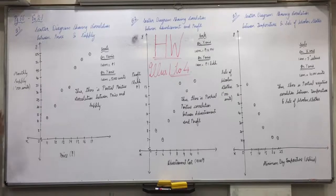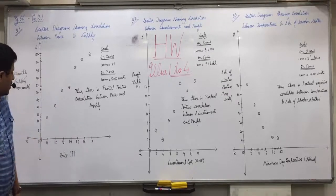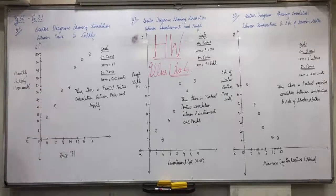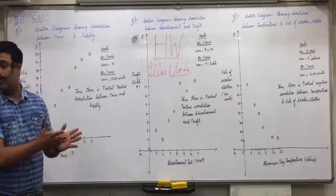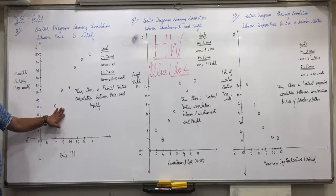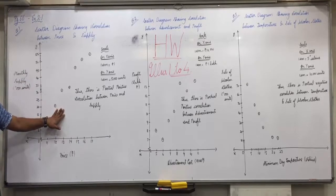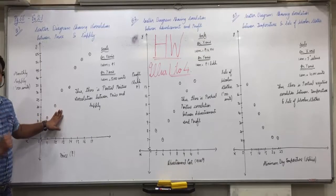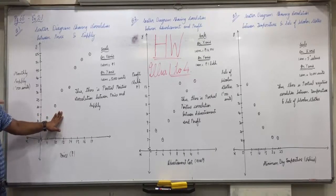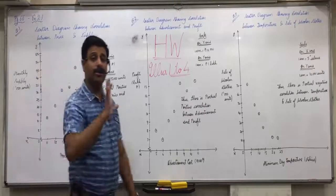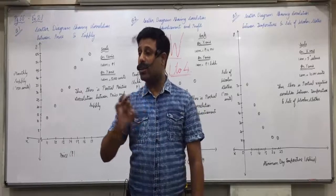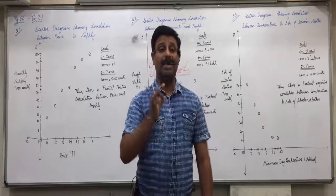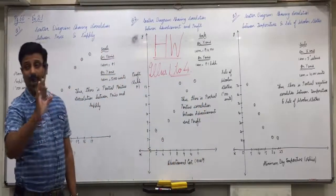The limitation of the scatter diagram method: we can judge whether the correlation is partial positive or partial negative, but the exact value of R — which we find using Karl Pearson's or Spearman's rank correlation — cannot be obtained. For example, in partial positive correlation, is R = 0.8, 0.9, or 0.76? The exact degree of correlation cannot be determined from a scatter diagram.